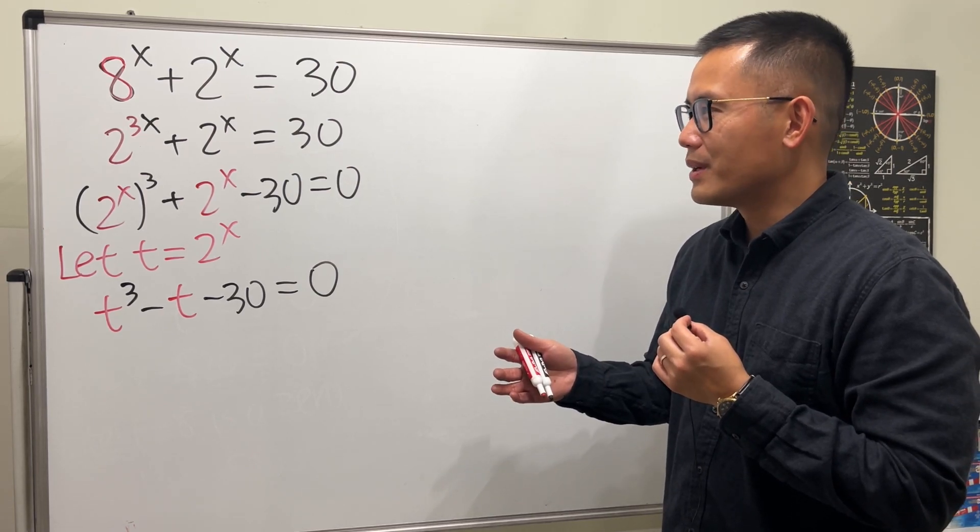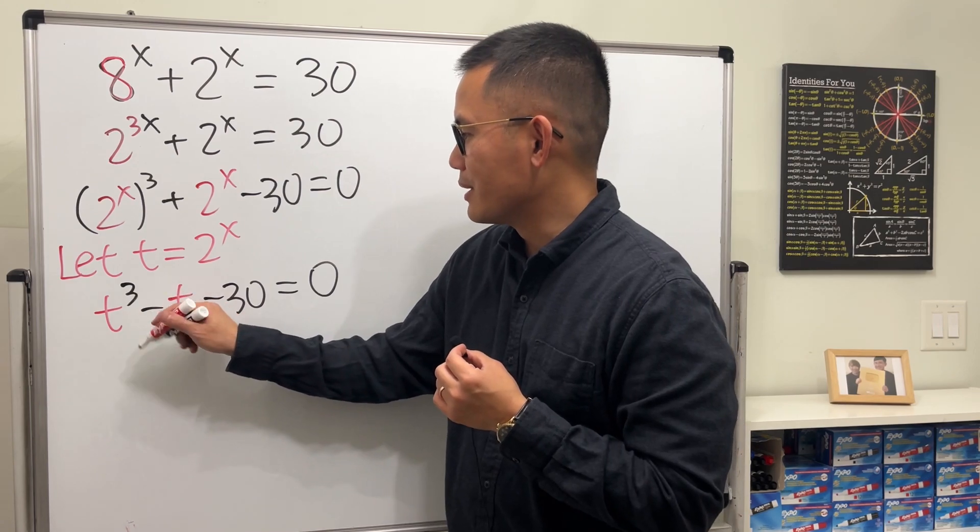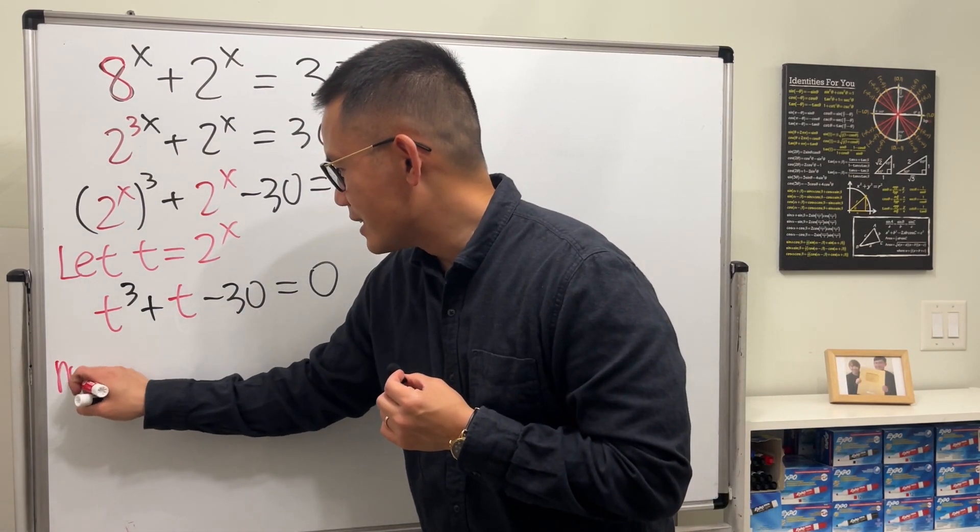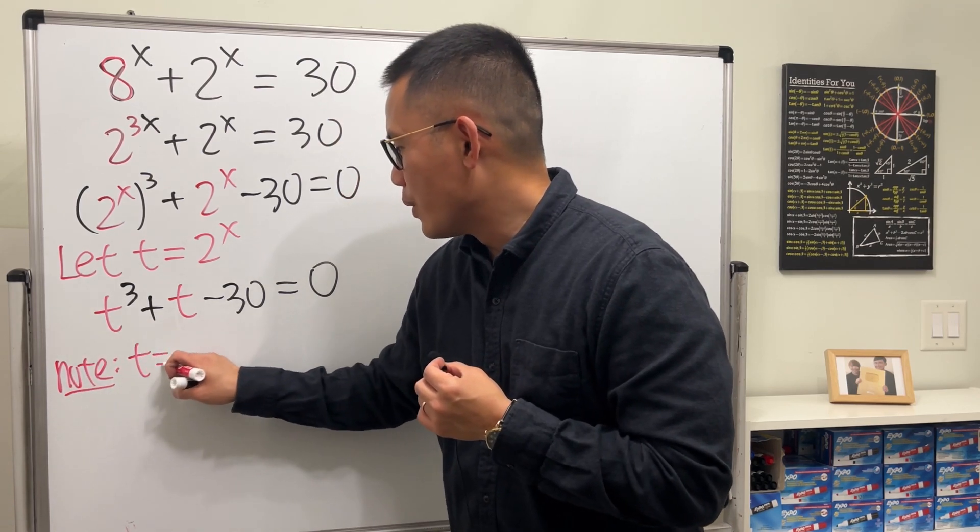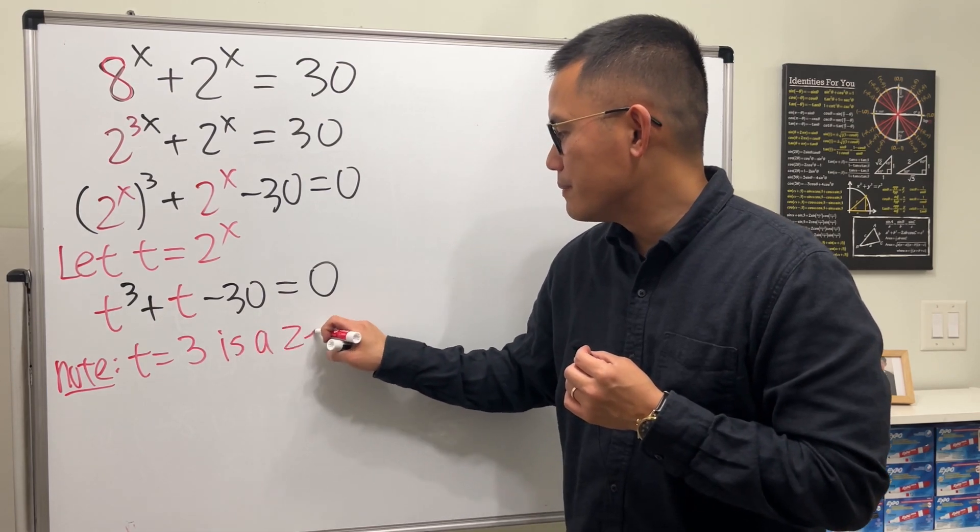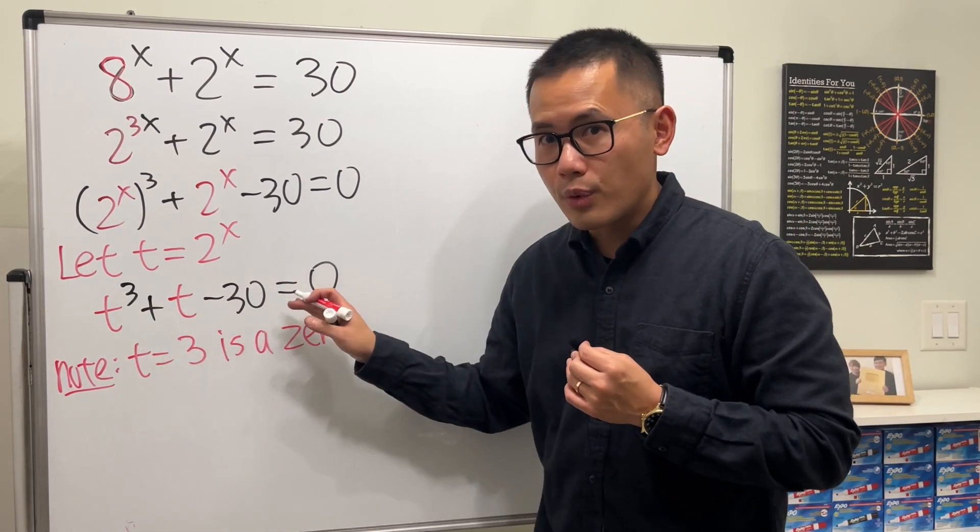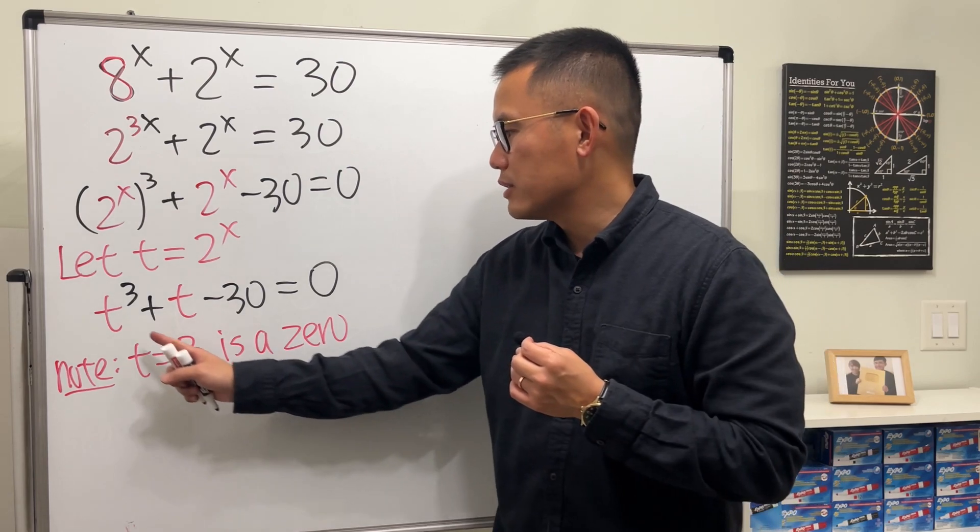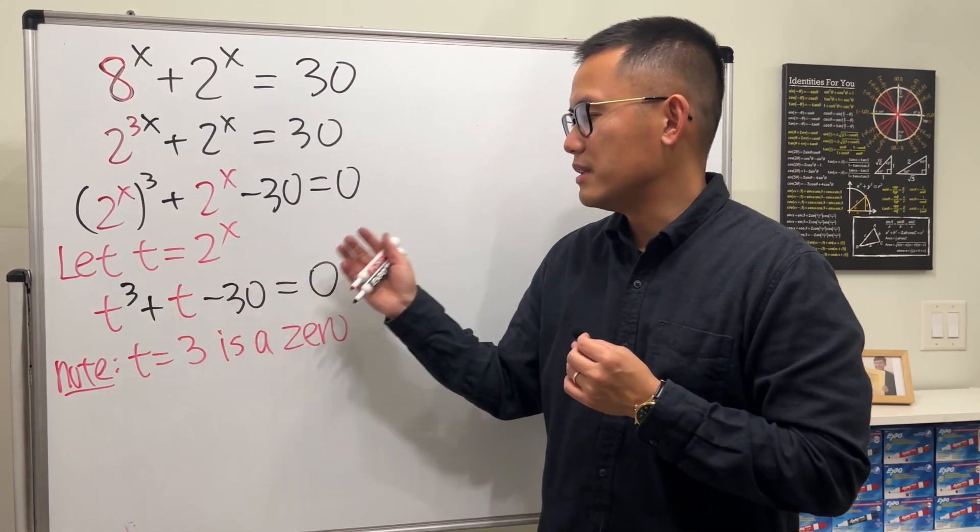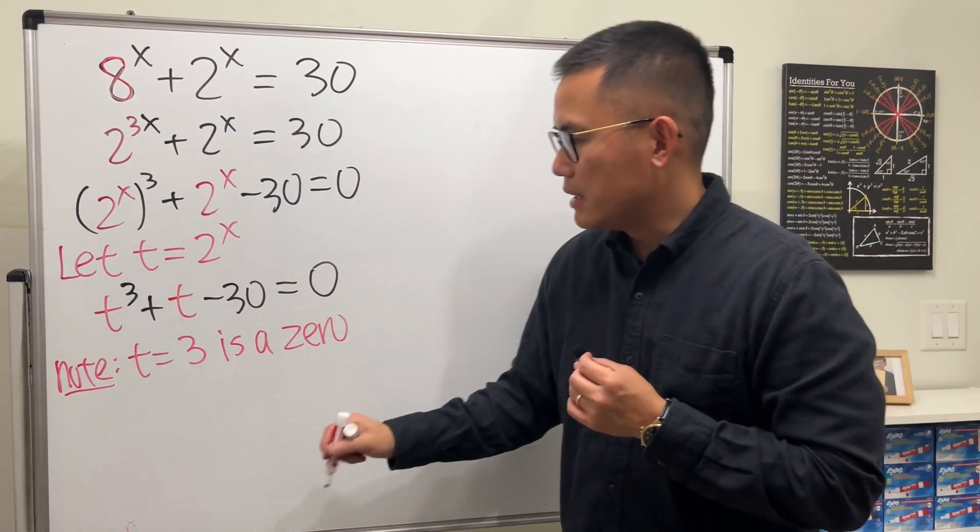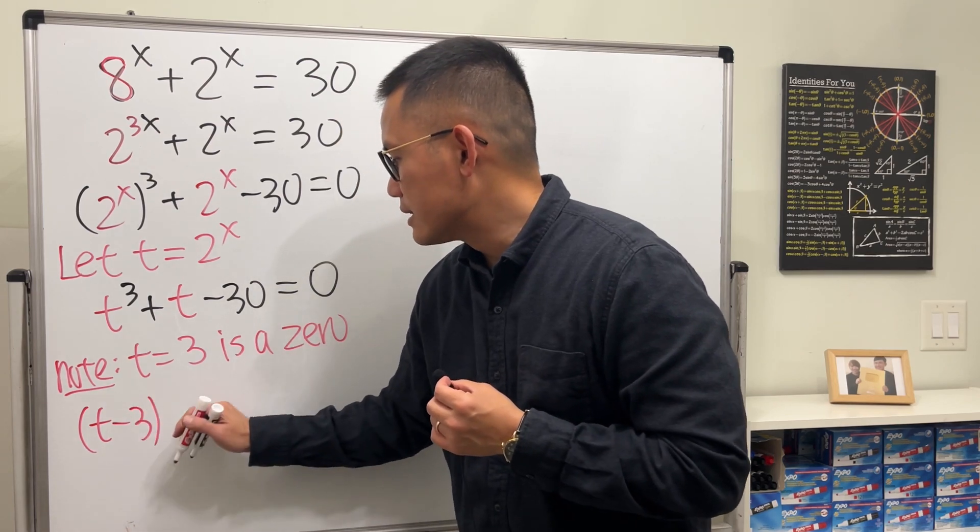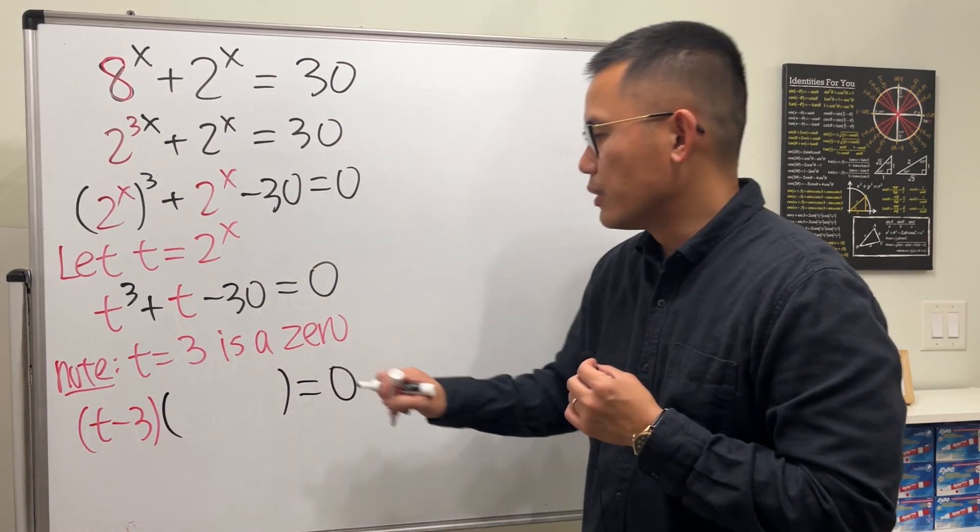3, I think it works, right? Oh, actually, no. Sorry, this right here should be a plus. I'm sorry. 3 works. So I would just say, note, t equals 3 is a zero to this polynomial equation. Meaning if you plug in 3, 3 to the 3rd power is 27, plus 3, which is 30, minus 30 is 0.